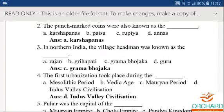Third question: In Northern India, the village headman was known as — Rajan, Grihapati, Grama Bhojaka, or Guru? The answer is Grama Bhojaka. Spelling for Grama Bhojaka: G-R-A-M-A B-H-O-J-A-K-A.